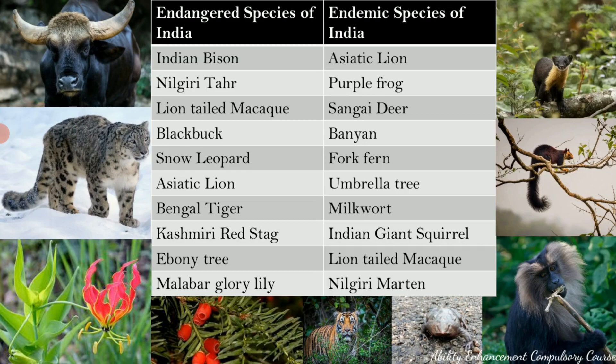Endangered species of India include the Indian bison (gaur), snow leopard, Malabar glory lily, and Assam catkin yew. Other examples are the ebony tree, bird's foot, Asiatic lion, black buck, lion-tailed macaque, and Nilgiri tahr. Interestingly, the Malabar glory lily is present in high numbers in Tamil Nadu but is endangered in Karnataka, so it has been placed on the endangered species list.